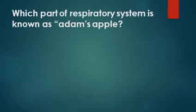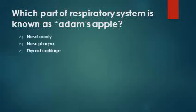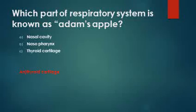Which part of the respiratory system is known as Adam's apple? Options are nasal cavity, nasopharynx, or thyroid cartilage. The answer is thyroid cartilage. Thyroid cartilage is the part of the respiratory system known as Adam's apple.